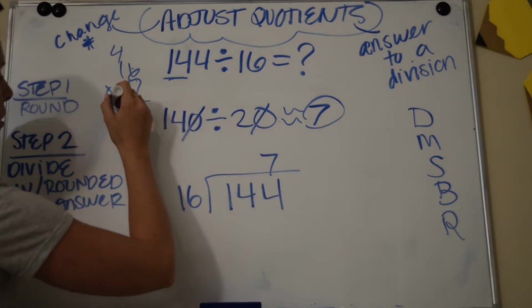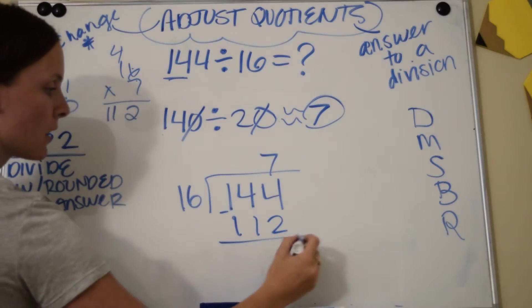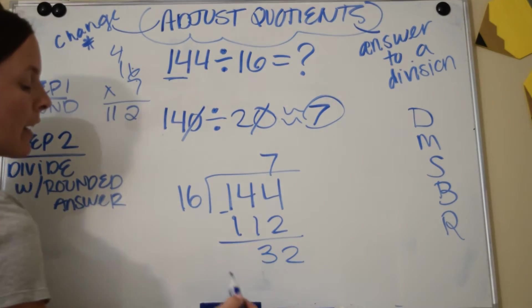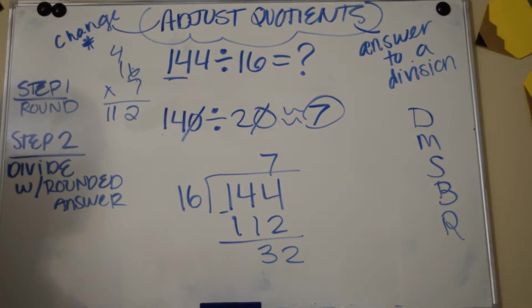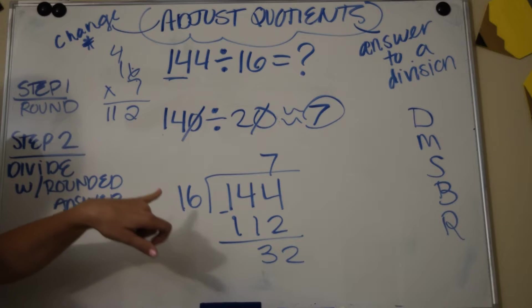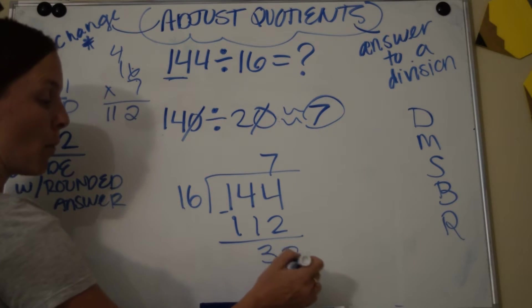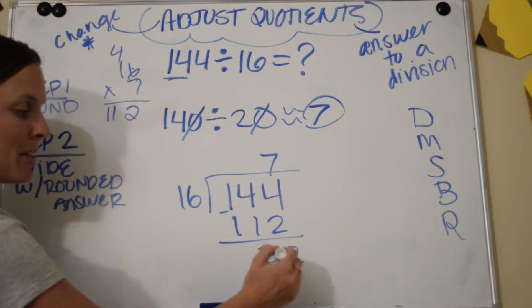So I have 112. Now I subtract and I have 32. Okay, so here's what we're going to do. Because 16 is way smaller than 32, my goal is to actually come out with a 0, right? Wouldn't I want this to be 0?